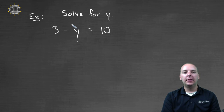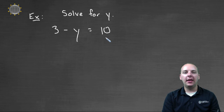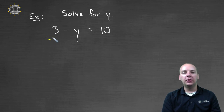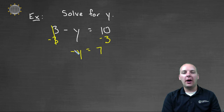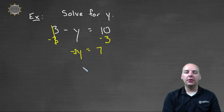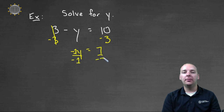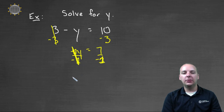Let's try one more example. Let's solve for y: three minus y equals ten. The first thing we want to get rid of is that three, which is being added to negative y, so we subtract three from both sides. When those cancel, we get negative y equals seven. The y is multiplied by negative one — there's an understood negative one there — so we divide both sides by negative one. The negative ones cancel, and we get y equals negative seven.